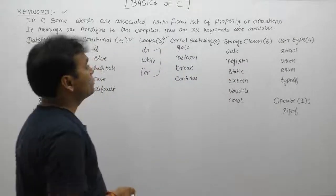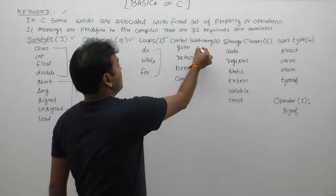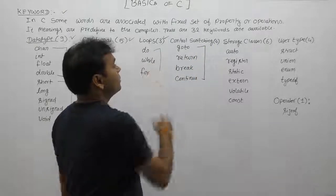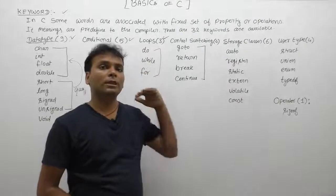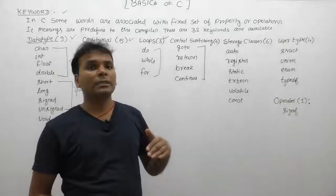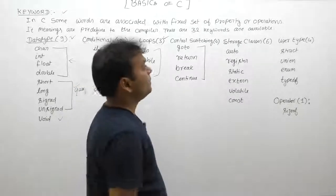Next, control switching and control jumping statements are available using 4 types of keywords: goto, return, break, and continue. We will discuss the meanings of these keywords in detail one-by-one in next videos or sessions.